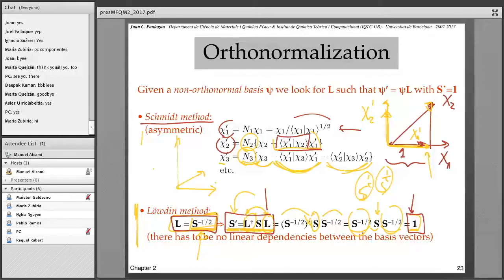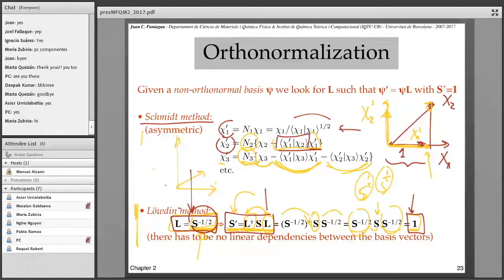Sometimes, when we work with large basis sets, sometimes the overlap matrix has eigenvalues very close to zero. And in such cases, you can have numerical problems for calculating the inverse of the matrix. In fact, it's the square root of the inverse of the matrix.